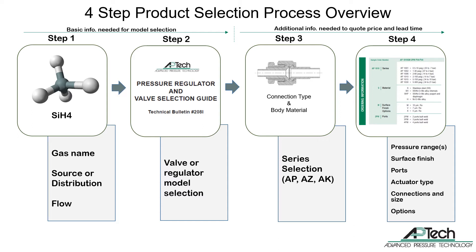Step three is to determine the series such as AP, AZ, or AK. Most APTEC models come in AP, AZ, and AK series. The series differences will be explained later in this presentation. Step four is to locate the proper datasheets to configure a complete part number. A complete part number is needed to get a price quote and lead time, and includes series, connection type, pressure or pressures, ports, actuator type, and other options.